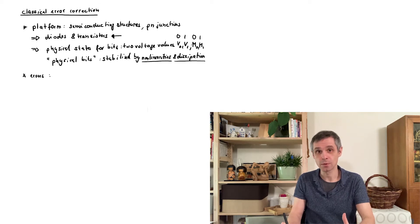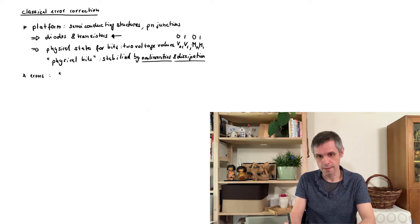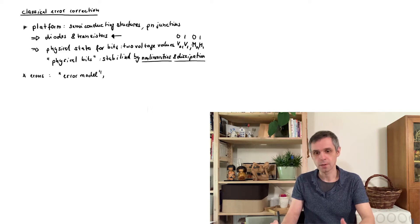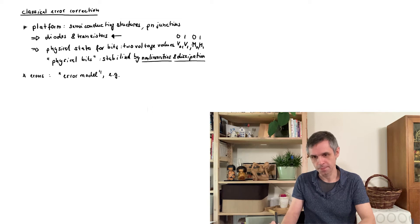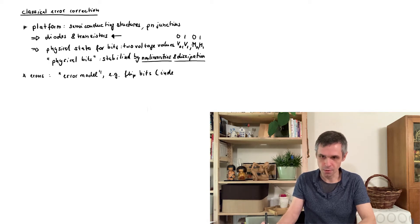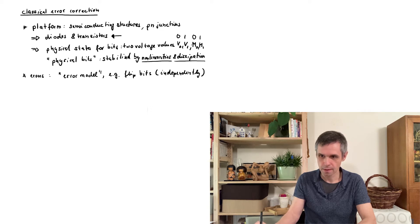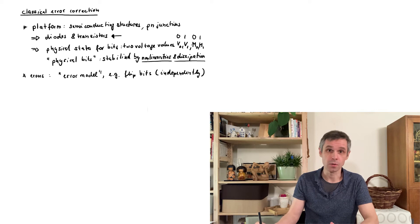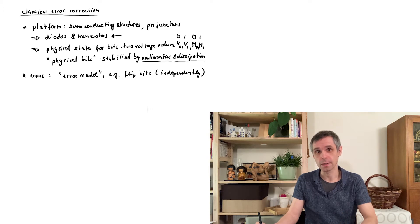First of all we need to have a good idea of what the possible sources of errors are, and this is known as the error model. For instance we could have bits that change their state unintendedly and we call these bits flipped. And this we could, for instance, assume that this can occur independently. For instance this could occur due to cosmic neutrinos, or because the gate doesn't function in the way that it was intended, or because we have a magnetic domain on our hard drive that is faulty.